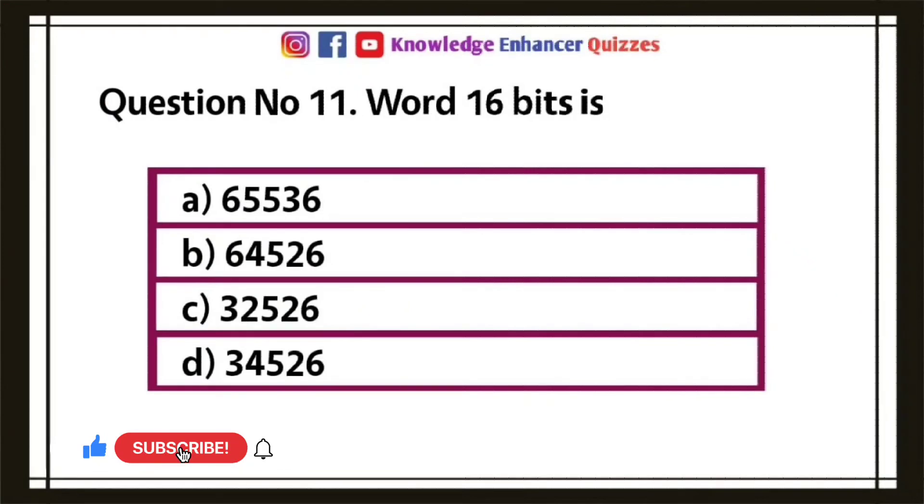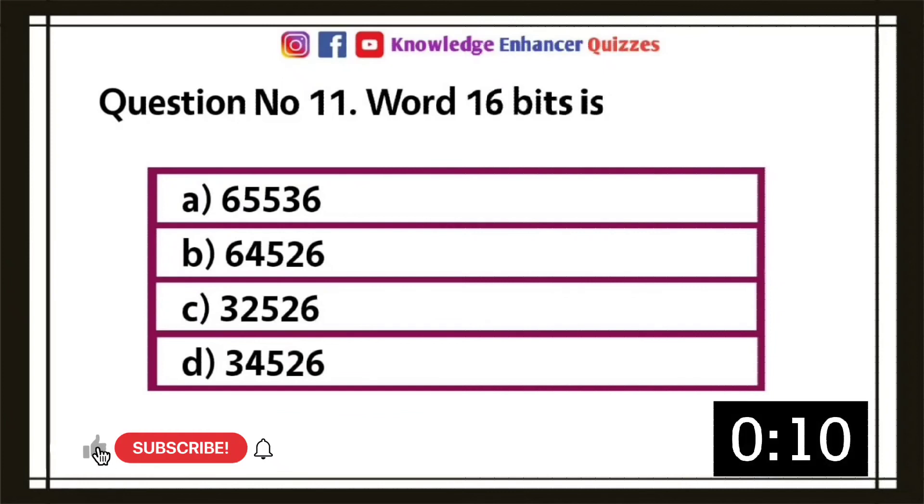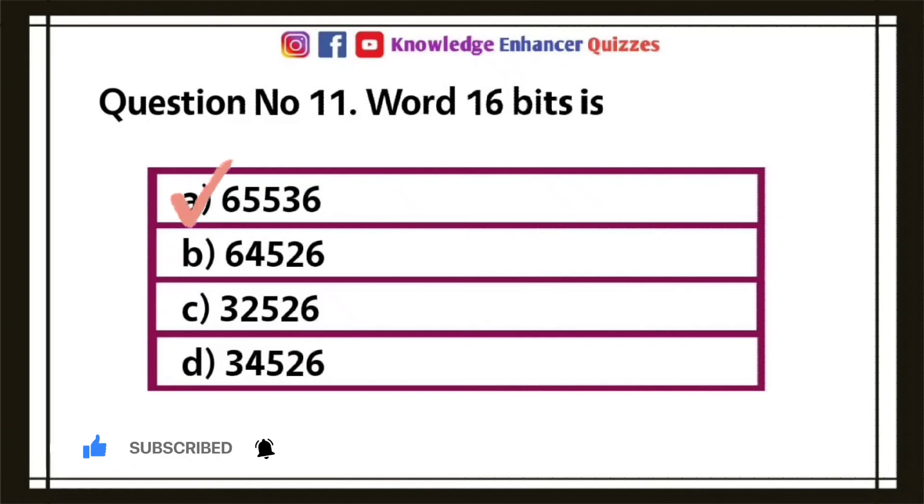Question number 11, word 16 bits is: A, 65,536; B, 64,526; C, 32,526; D, 34,526. Option A is the right answer.